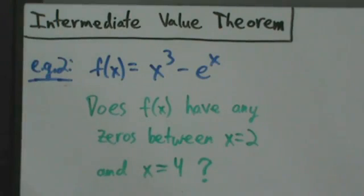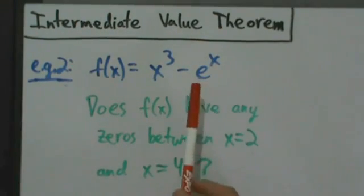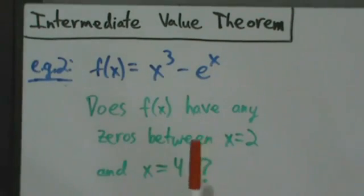Same kind of thing as before. First we see is f(x) continuous? x cubed is continuous everywhere, e to the x is continuous everywhere, so x cubed minus e to the x is also continuous everywhere. That's great, we don't have to worry about that.